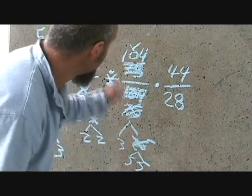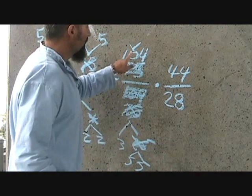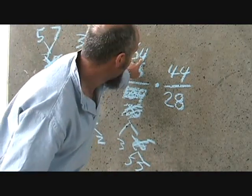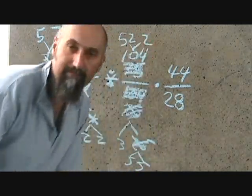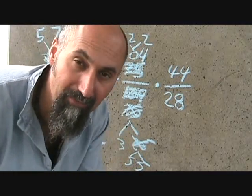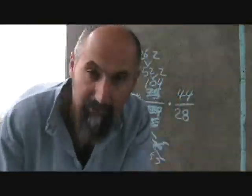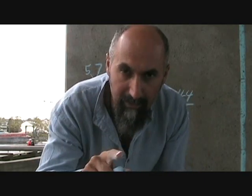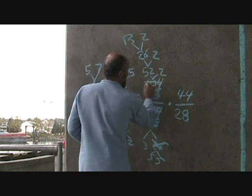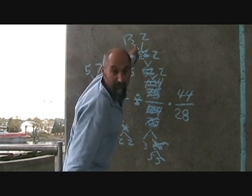One hundred and four — it ends with a four, it's an even number, so you can divide it by two. One hundred divided by two is fifty, four divided by two is two, so 104 divided by two is fifty-two. Fifty-two breaks down further: fifty divided by two is twenty-five — actually fifty-two divided by two is twenty-six. Kill every number that has branched off. So 104 is actually two times two times two times thirteen, and you can't break down thirteen anymore because it's a prime number.